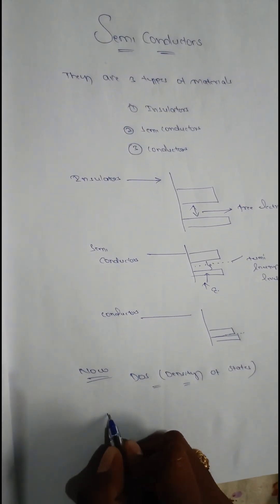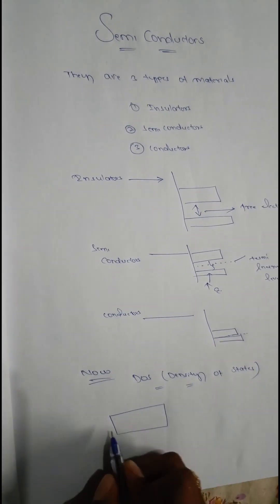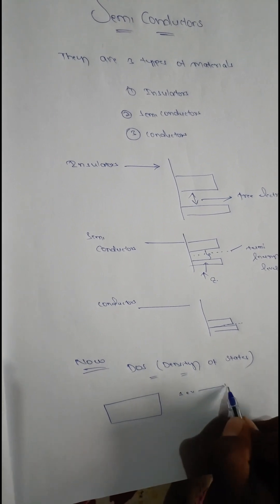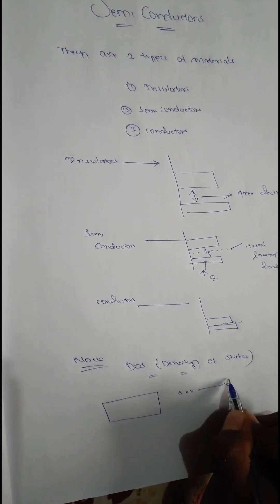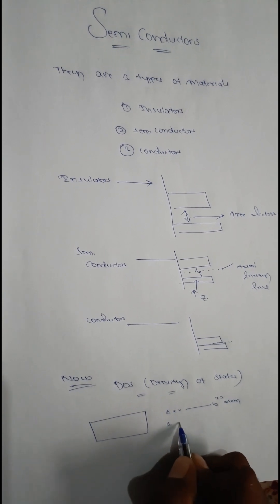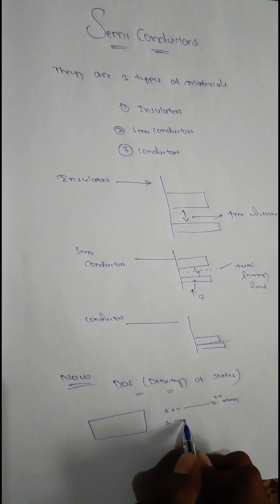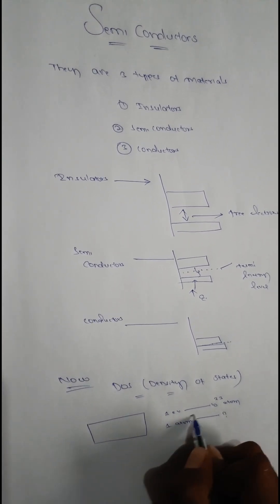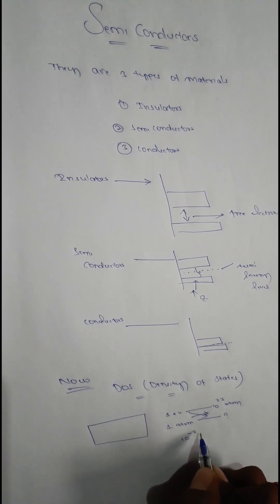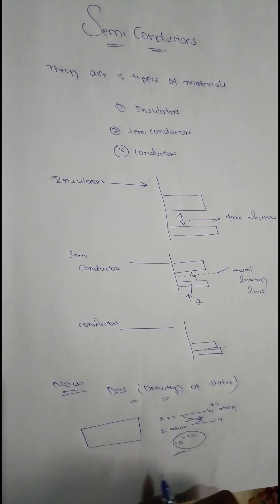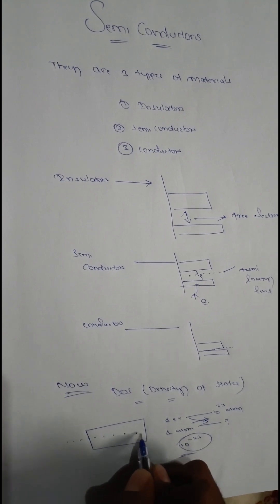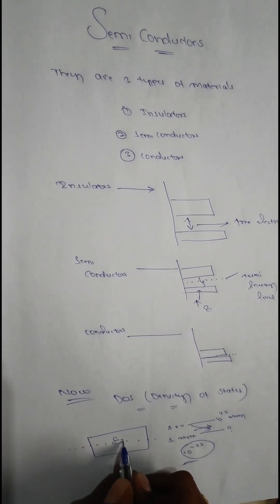Let us consider an energy band. We know that one electron volt corresponds to 10 power 23 atoms. But one atom equals how much energy? Cross multiply it — it gives 10 power minus 23. So it is very little.